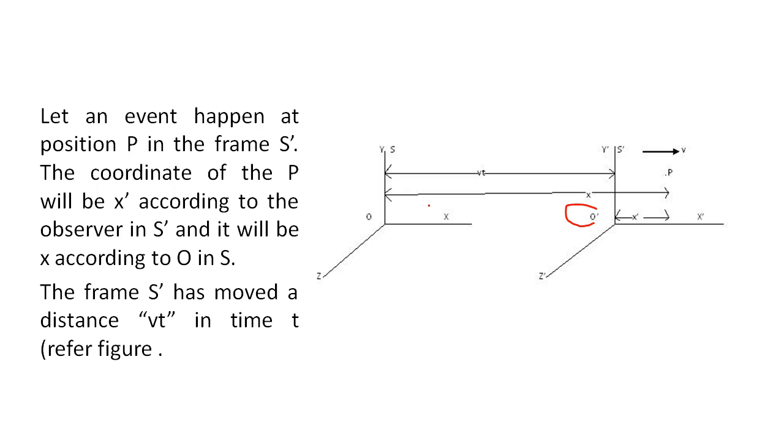And it will be x according to observer O in frame S. The frame S dash has moved a distance Vt in time t. You can see the figure that this is the distance Vt, the distance between these two frames S and S dash at a particular time t. Because we know that distance equals to velocity into time.